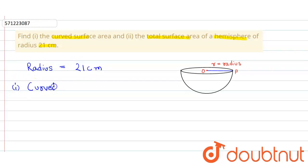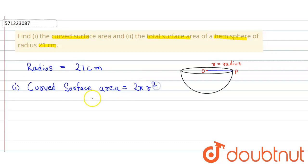The curved surface area of a hemisphere is equal to the formula 2πr².